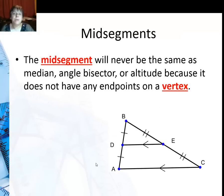Mid-segments will never be the same as the median, the angle bisector, or the altitude because it doesn't have any endpoints on a vertex. There is a possibility it could be the same as a perpendicular bisector, but that would only be on a right triangle and in very special cases.